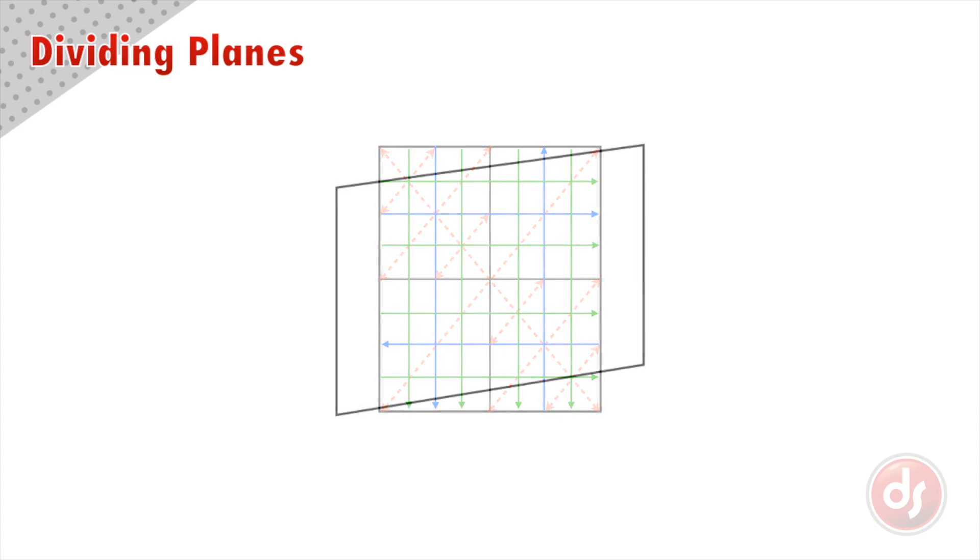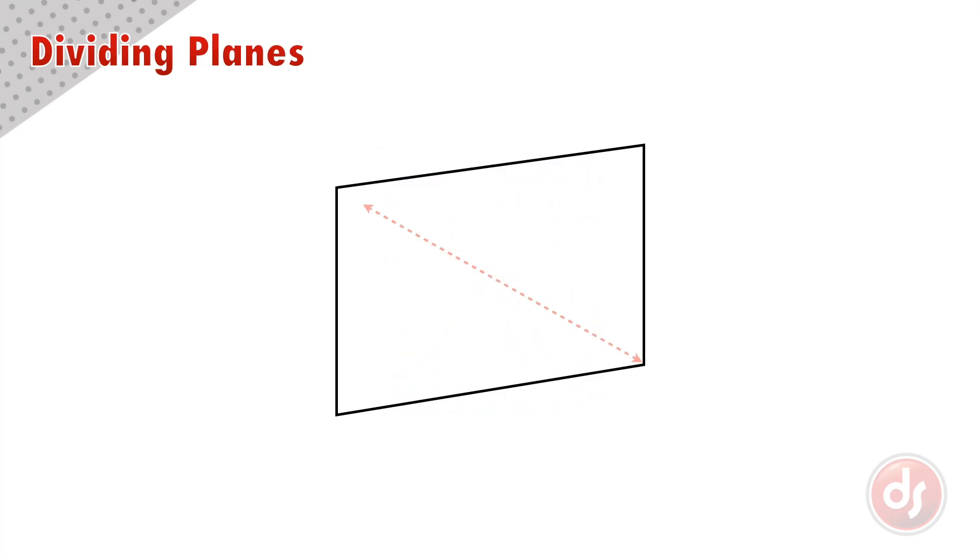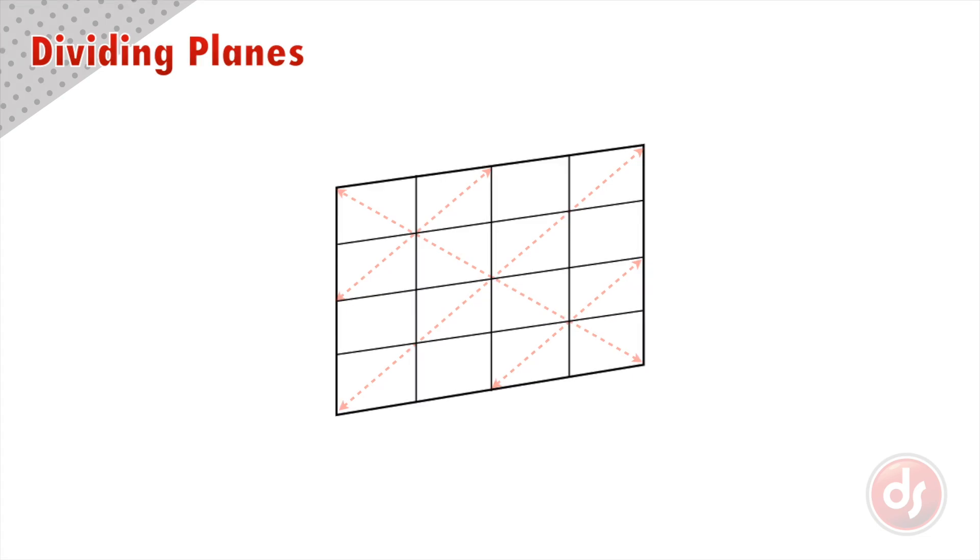It doesn't matter what proportion the rectangle is in, or if the plane is in isometric perspective. The X-trick will quickly divide your plane, but remember to stick with your X and Y lines in isometric perspective to keep it solid and correct.